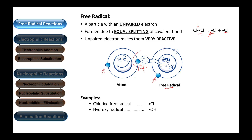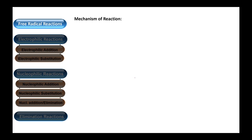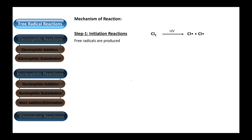Now let's move on to the mechanism of free radical reactions. It takes place in three steps. The first step is the initiation reaction, during which free radicals are generated. For example, because of UV light, the chlorine molecule is split into individual atoms each carrying its unpaired electron. Because these are free radicals, they are very reactive and will react with normal molecules.